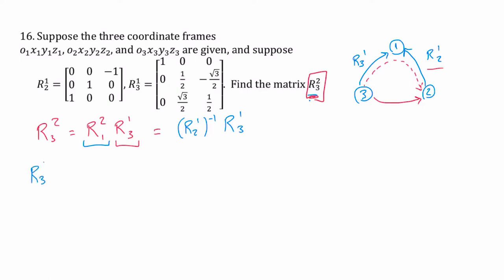So R3 and 2 is equal to this term that I have here: 0, 0, negative 1, 0, 1, 0, 1, 0, 0. And take the inverse of that times, I've got over here, this answer: 0, 0, 0, 1, half, negative root 3 over 2, 0, root 3 over 2, 1, half.